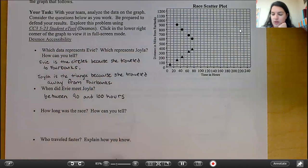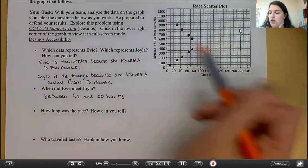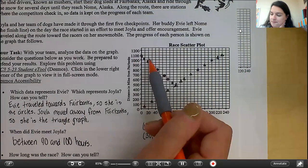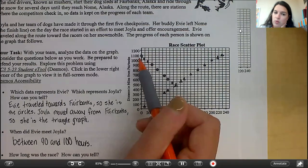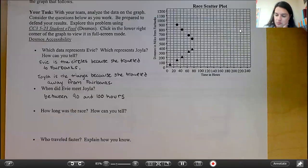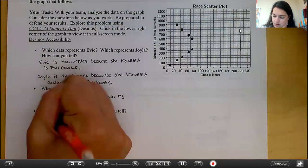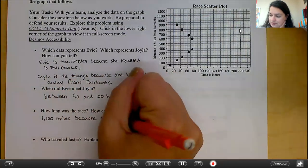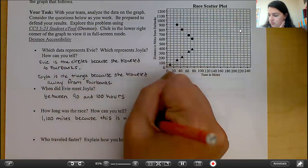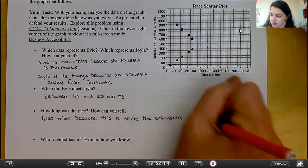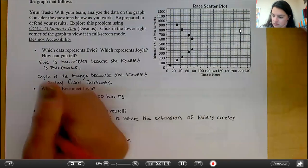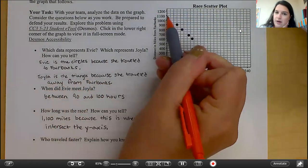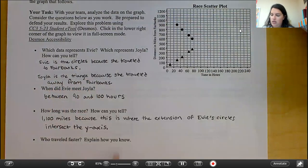The next one was how long was the race? How can you tell? Well, again, I said you needed to continue your circles and continue your triangles. So you also should have continued your circles up. If you would have continued your circles up, you could see on the graph that Evie started approximately at 1,100 miles. So, 1,100 miles. And how can you tell? Because this is where the extension of Evie's circles intersect the Y-axis. So you know that where we intersect the Y-axis, that would be her starting point. So go ahead and pause the video and answer the last two bullet points.